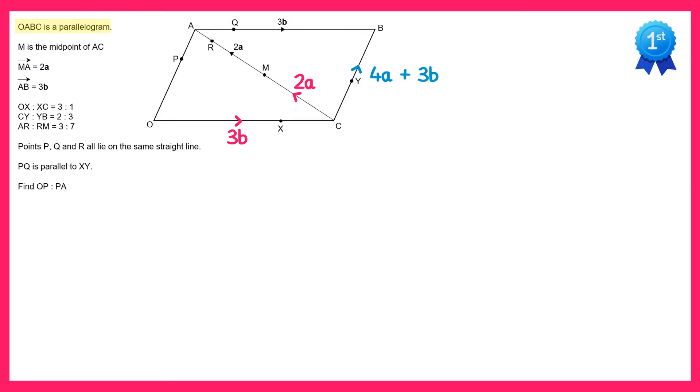And once again, since this is a parallelogram, the vector CB must be the same as the vector OA. So OA is also 4A plus 3B.